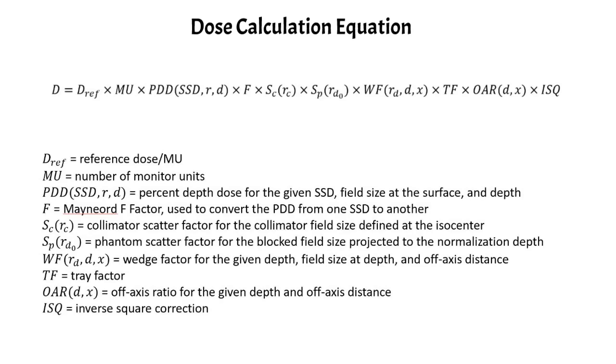You have the collimator scatter factor here for the collimator defined field size at the isocenter. You have the phantom scatter factor for the block field size projected to the normalization depth. You have your wedge factor, tray factor, you might need an off-axis ratio, and you also have your inverse square correction.